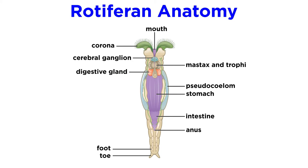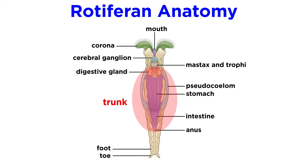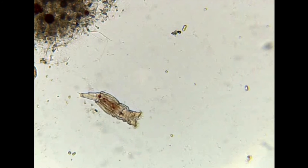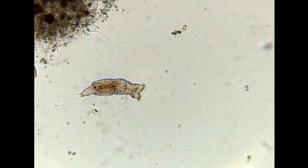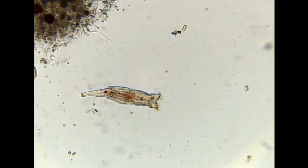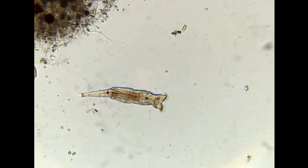Rotifers are considered to be non-segmented, though they do have distinct body regions: those being the head, which bears their ciliated corona; a trunk, which holds most of their internal organs; and a posterior foot. Their bodies lack cilia except for the corona. It is the rhythmic beating of the cilia within the corona that gives these animals their name. Cilia on the corona beat in synchronous succession, giving the appearance of a revolving wheel, or pair of wheels. The beating of these cilia aids in both locomotion and feeding.